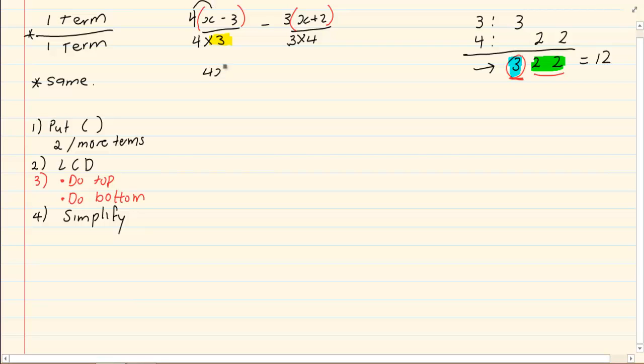4 times x is equal to 4x minus 12. Now when you are simplifying, the sign has to also be simplified in the expression. So we have minus 3x minus 6.